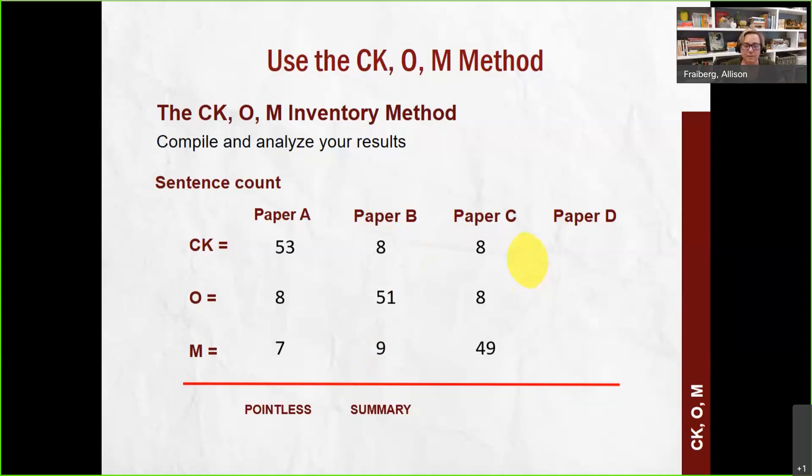Paper C. Let's say has eight sentences that are common knowledge. Eight sentences that are drawing on the research that are other people's ideas. And 49 sentences, which are the writer's. This is what the writer thinks. Is that good? No. That's simply a rant. That's the writer going on a rant and not paying attention to the conversations that have come before them, to the research that's out there in the field. So that's not helpful.